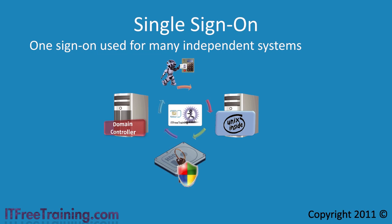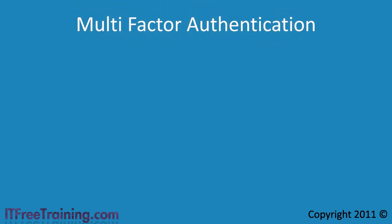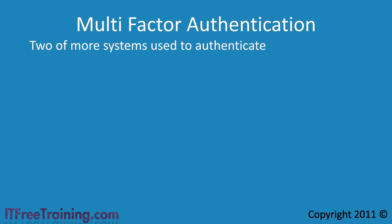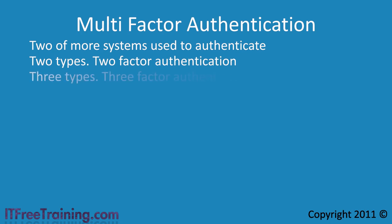The next problem with smart cards is if the smart card were stolen or borrowed and then used without the owner's approval. To help prevent unauthorized use, Windows uses a system called multi-factor authentication. Multi-factor authentication means that more than one system is used in authentication. If two types of authentication are used, it is often referred to as two-factor authentication. If you used three types, you could call it three-factor authentication, or just keep it simple and stick to multi-factor authentication when using two or more authentication systems.